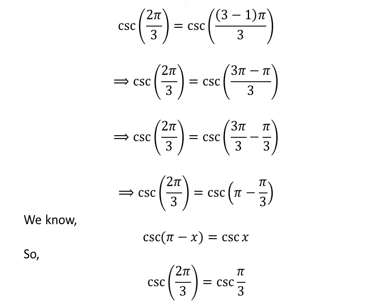Application of the above identity gives us cosecant of 2 times pi upon 3 is equal to cosecant of pi upon 3.